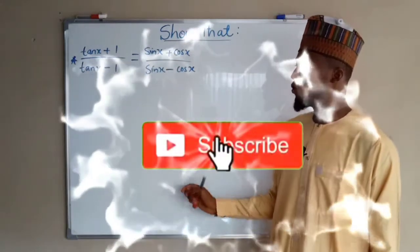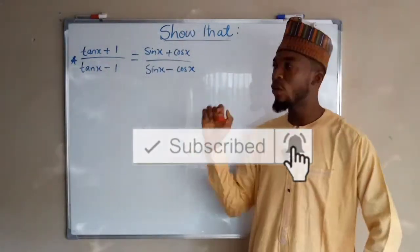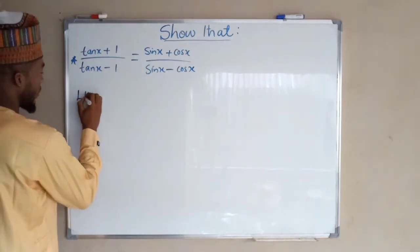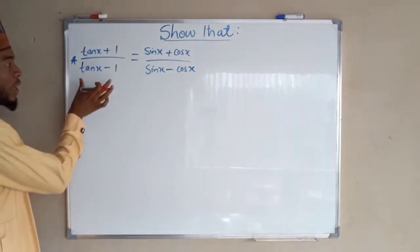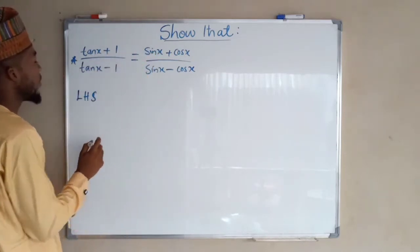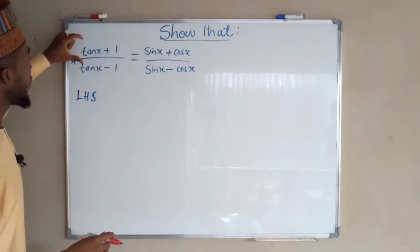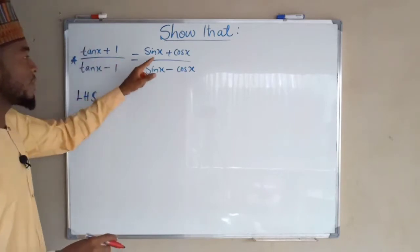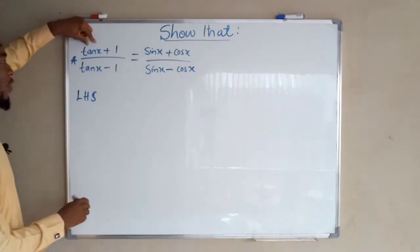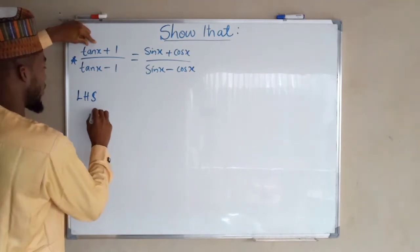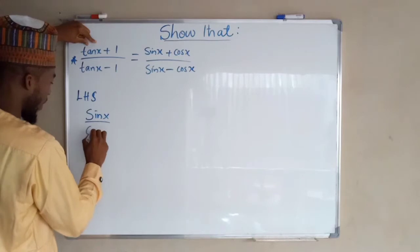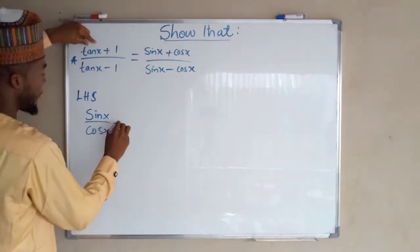So we want to show that the left-hand side is equal to the right-hand side. From the left-hand side we have this expression. We want to prove that it is equal to the right-hand side. So we are going to transform the expressions in terms of sine and cosine. We know that tan x is going to be sine over cosine, so we have sin x over cos x plus one.